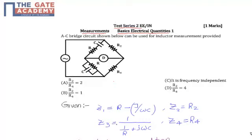1/(1/R + jωC), which is the value of Z3. And Z4 is R4.